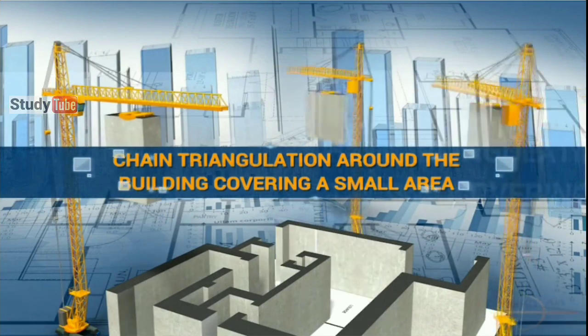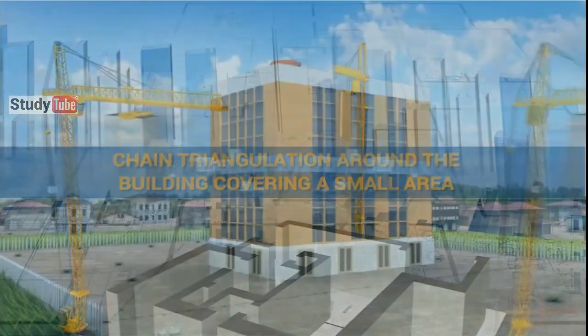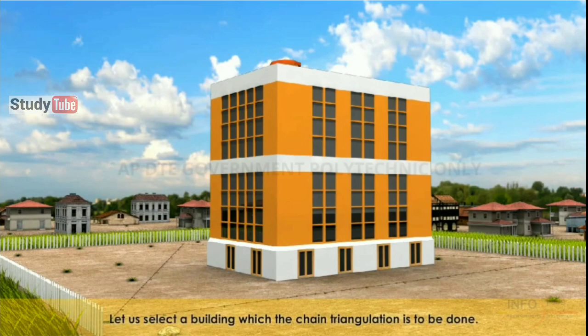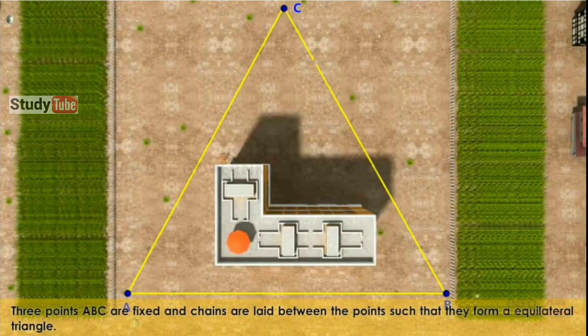Chain triangulation around the building covers a small area. In this video, let us see how a chain triangulation is performed around a building. A building is selected on which chain triangulation is to be done. Three points A, B, C are fixed and chains are laid between the points such that they form an equilateral triangle.